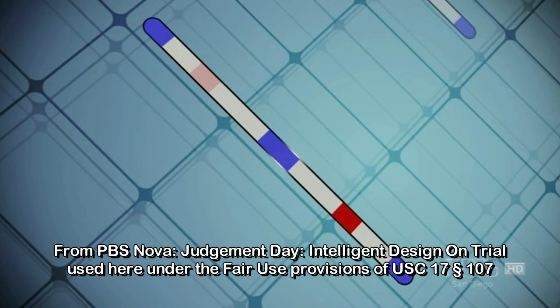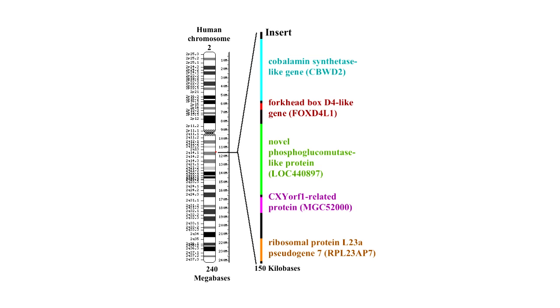Thirty years later, sequencing of both human and chimpanzee genomes allowed the scientists to test this prediction once and for all, and what they found matched the predictions of evolution precisely. Human chromosome number two is a fusion of two ape chromosomes. Everything matches just as evolution said it should.